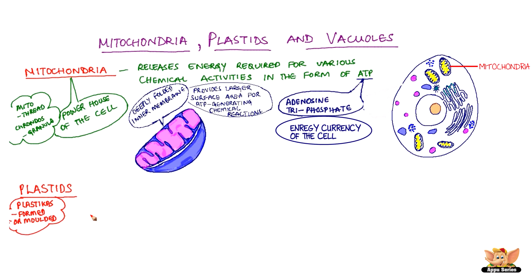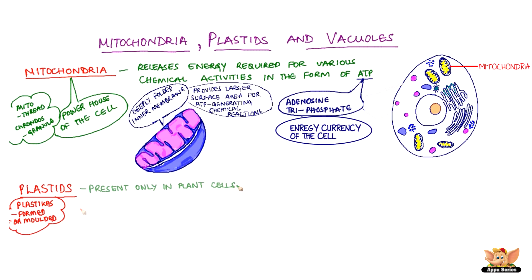Plastids is derived from the Greek word plastikos, meaning formed or molded. Plastids are present only in plant cells. These are broadly classified into two main types: chromoplasts and leukoplasts.